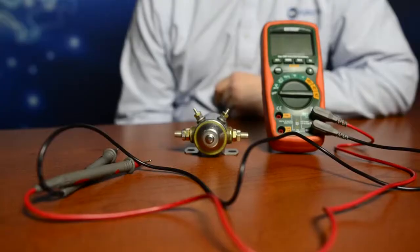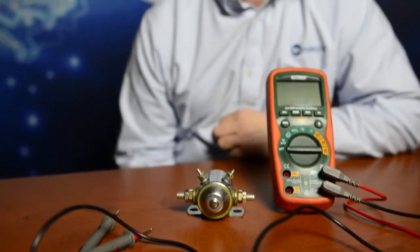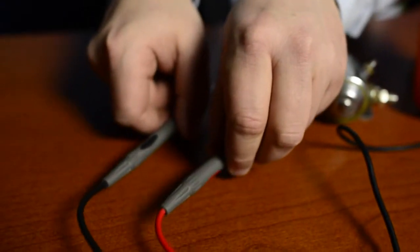An ohmmeter is a very important tool because a lot of times in a spec or a test we have to check the resistance value of some component. A common part on a truck is a mag switch. We can use our ohmmeter and check the coil of that mag switch and see if it's good or bad.